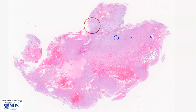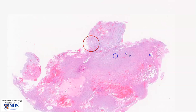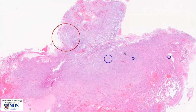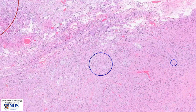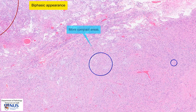The entire tissue piece is composed of tumor, and zooming into this area, we can see at this magnification a biphasic appearance, meaning that there are some pinker areas which are more compact, and in between the pinker areas there are these looser, paler areas that are sometimes called microcystic areas.